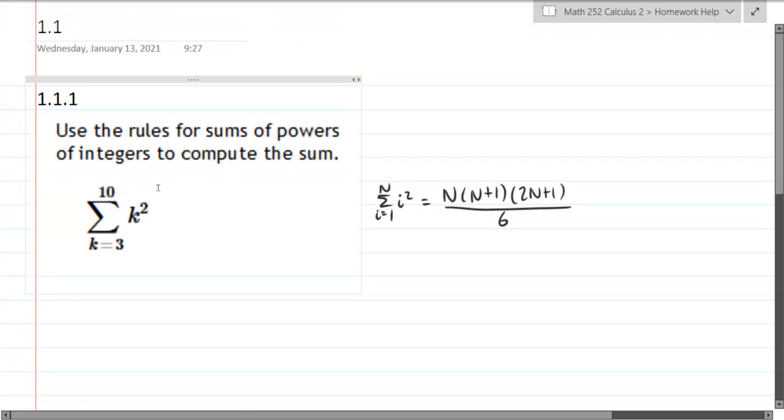We could write out every single one here and then add them together. So we're starting at 3, not at 1, so we have 3 squared plus 4 squared, we're just increasing k by 1 each time, plus 5 squared and we're going to end with 10 squared. So you can definitely add these numbers up, there's only a few, that's one option.